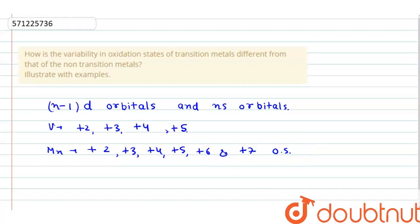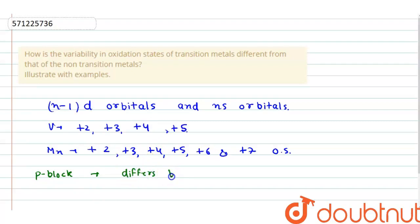On the other hand, if we talk about variable oxidation states shown by non-transition elements like p-block elements, they show oxidation states which differ by 2 units.